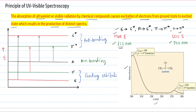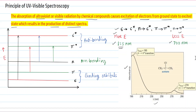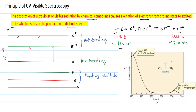That is why ultraviolet and visible radiation causes the excitation of electrons in a molecule from ground state to excited state. Looking at the UV spectrum of acetone as an example: acetone possesses sigma electrons, pi electrons, and non-bonding electrons on the oxygen — also called lone pairs. In acetone, we find sigma→sigma-star, n→sigma-star, pi→pi-star, and n→pi-star transitions.